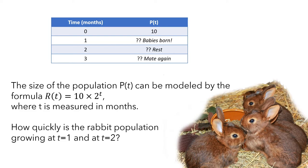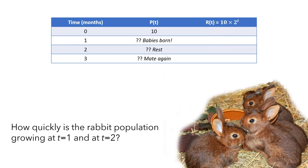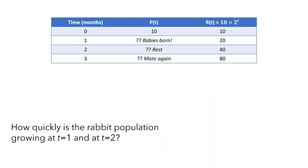It's a model, so it's not going to be completely accurate, but if we use this formula, it would predict that there are 10 rabbits at the start, approximately 20 rabbits after 1 month, 40 rabbits after 2 months, and 80 rabbits after 3 months. We know that at the beginning of month 4 more babies would be born, so this model is probably telling us there were 80 rabbits at the end of month 3. Since the babies were all born at t equals 1, this would mean there are also 80 rabbits at t equals 1 and t equals 2.